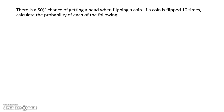The context we're going to look at is this problem here. There's a 50% chance of getting a head when flipping a coin. If a coin is flipped 10 times, we're going to calculate the probability of each of the following.